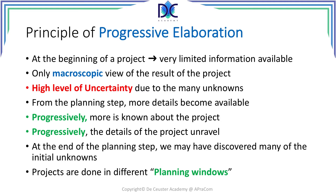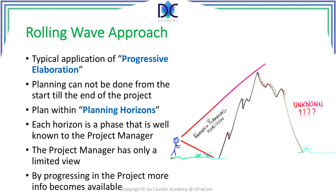At the end of the planning step we may have discovered many of the initial unknowns. Projects are done in different planning windows. This is the idea behind progressive elaboration. One of the applications of progressive elaboration is the rolling wave approach — we cannot plan everything from the beginning of the project.